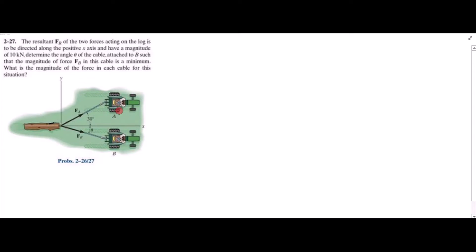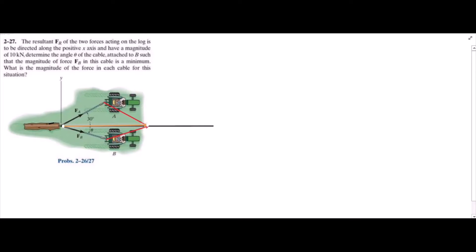To solve this problem, first we have to construct a parallelogram using these two forces. I'll extend the x-axis and draw the projection of the vector Fa and the projection of the vector Fp. The resultant is acting on the x-axis and will be drawn from the tail of these two vectors to the opposite end. This is Fa, this is Fp, and this vector is Fr. This angle is theta, and this unknown angle we'll call beta.